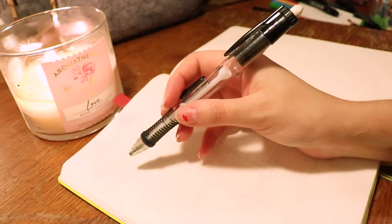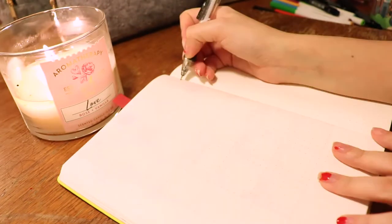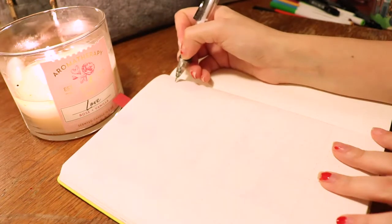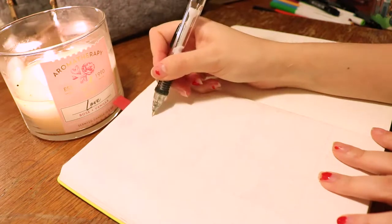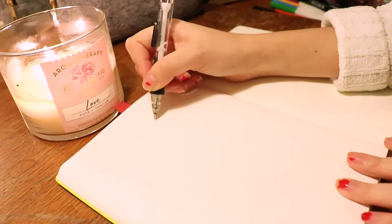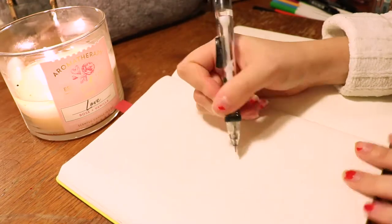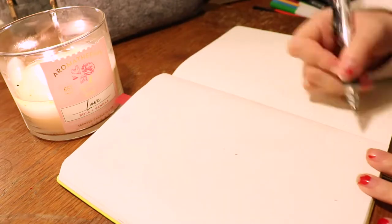We're going to start on a clean page. This is one supply that I forgot to mention that I really highly use: the Paper Mate pencil. It's just really good, I'm sure you've seen it. As you can see, I'm just kind of making little dots.